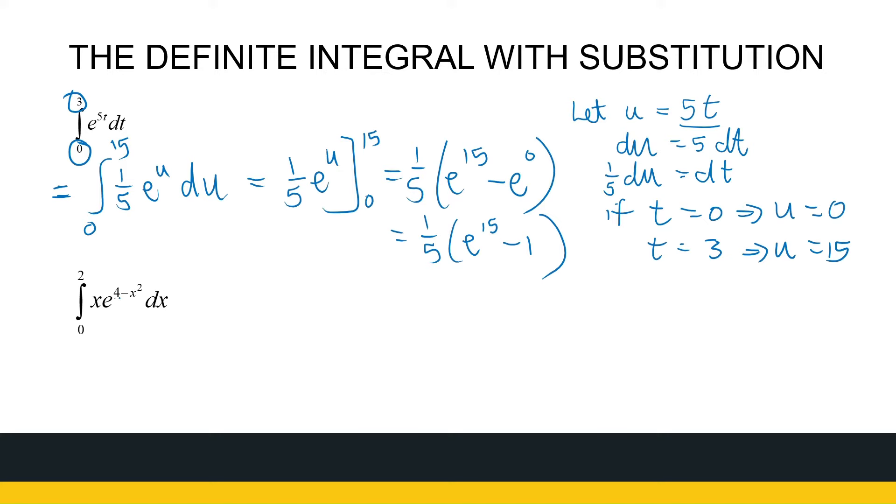Let's look at the next one. I see my exponent 4 minus x squared. Its derivative is here, x in some form or another. So I'm going to say let p be equal to 4 minus x squared. dp is then minus 2x dx. I've got an x dx, so that's minus a half dp.